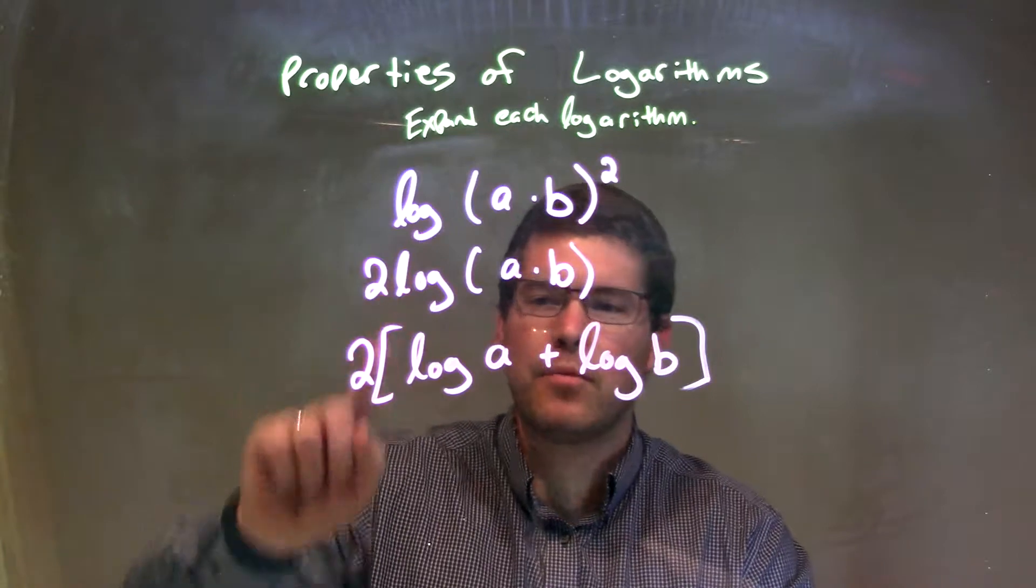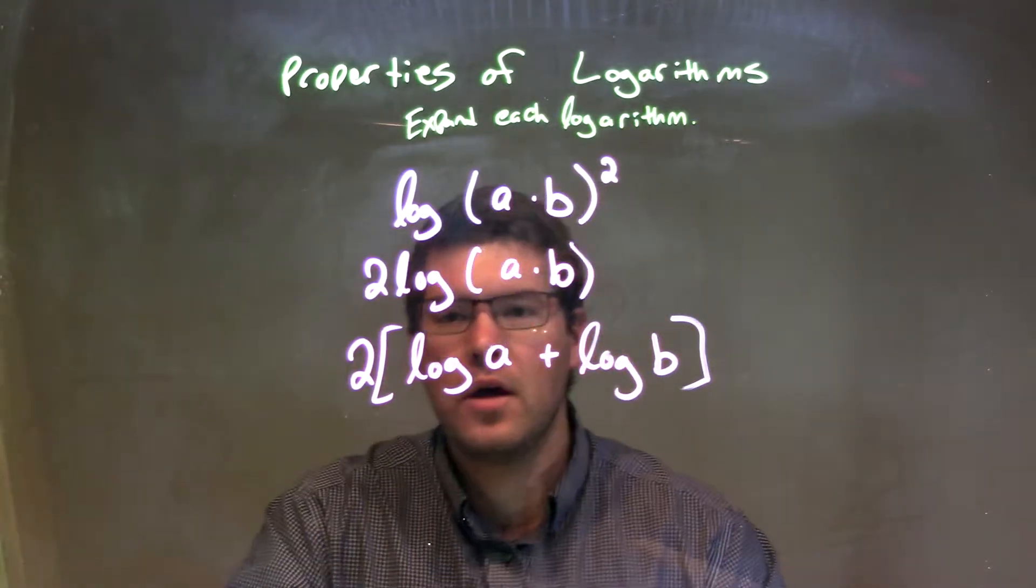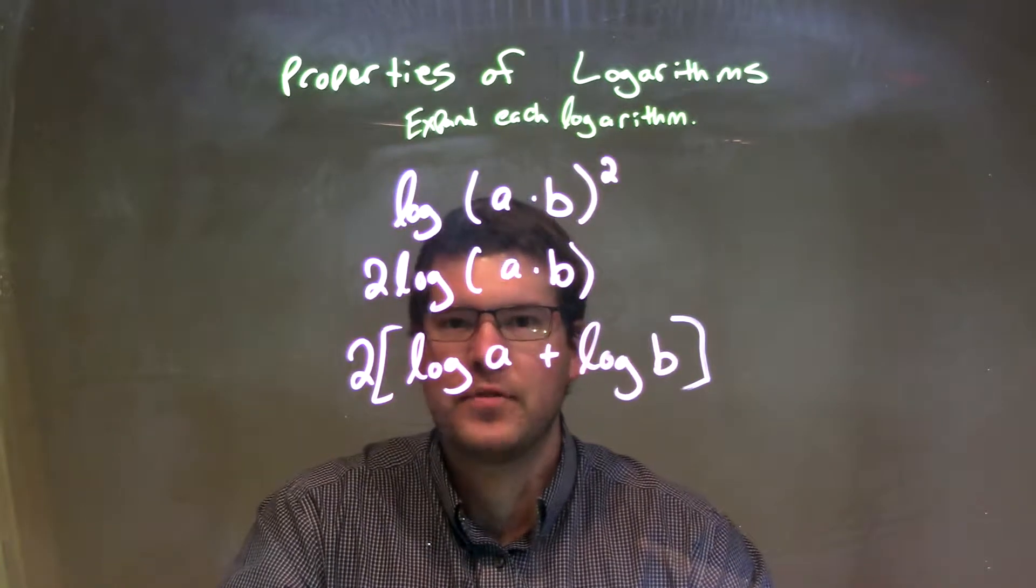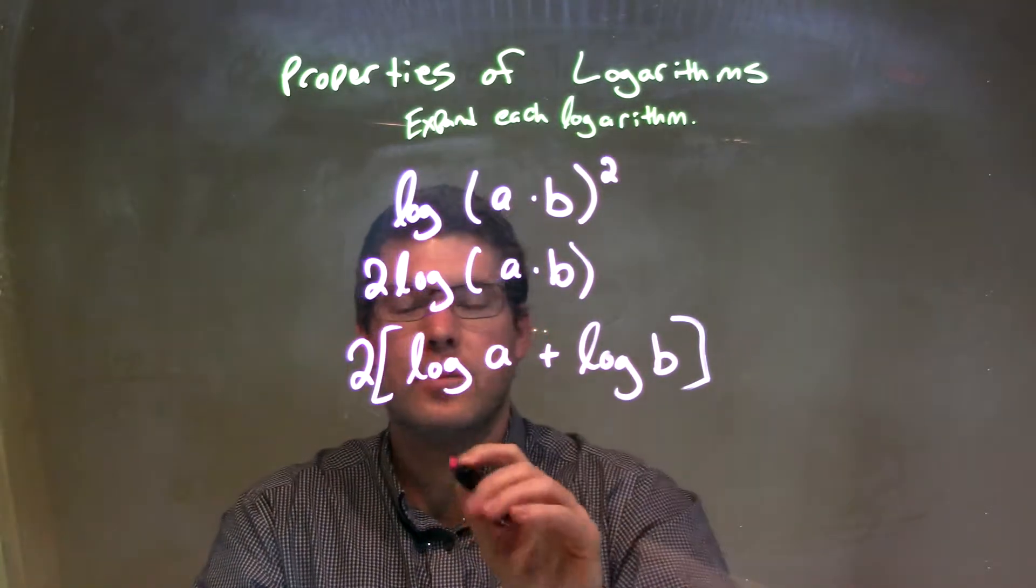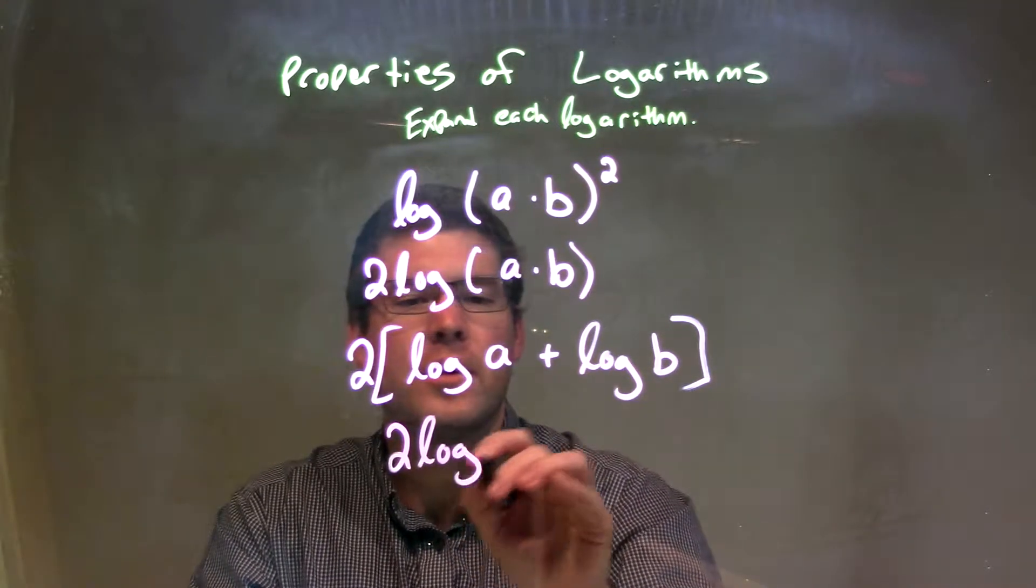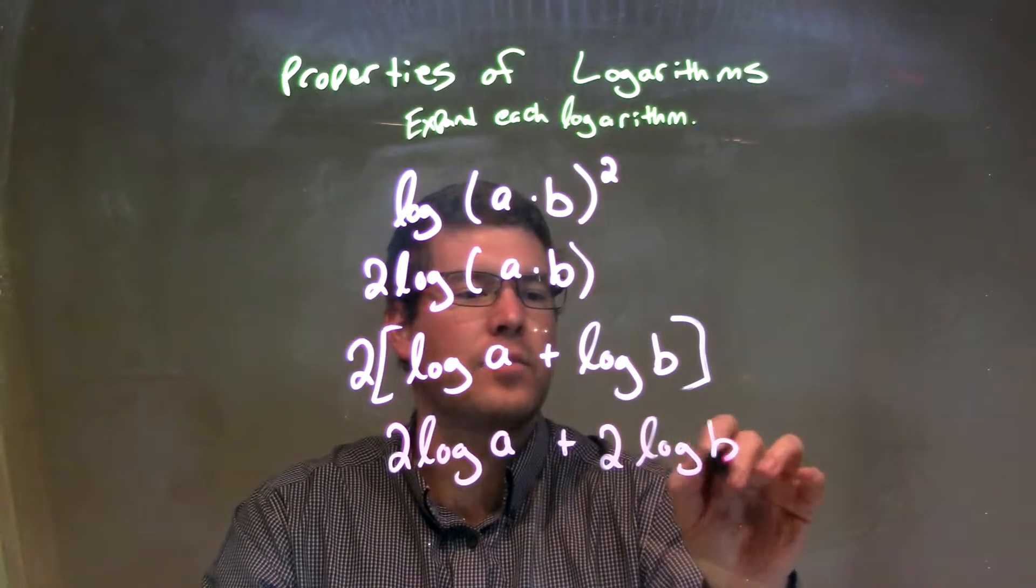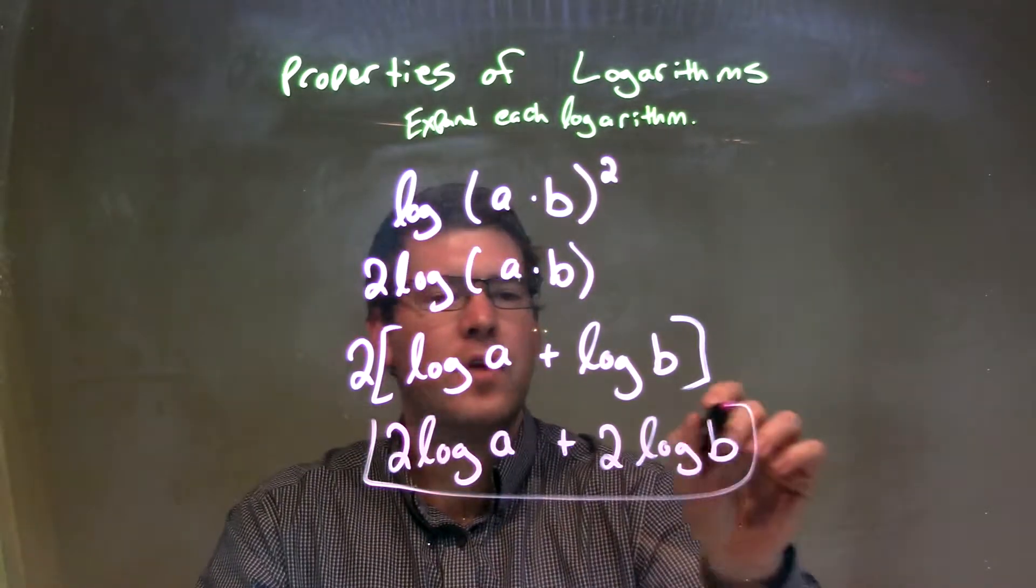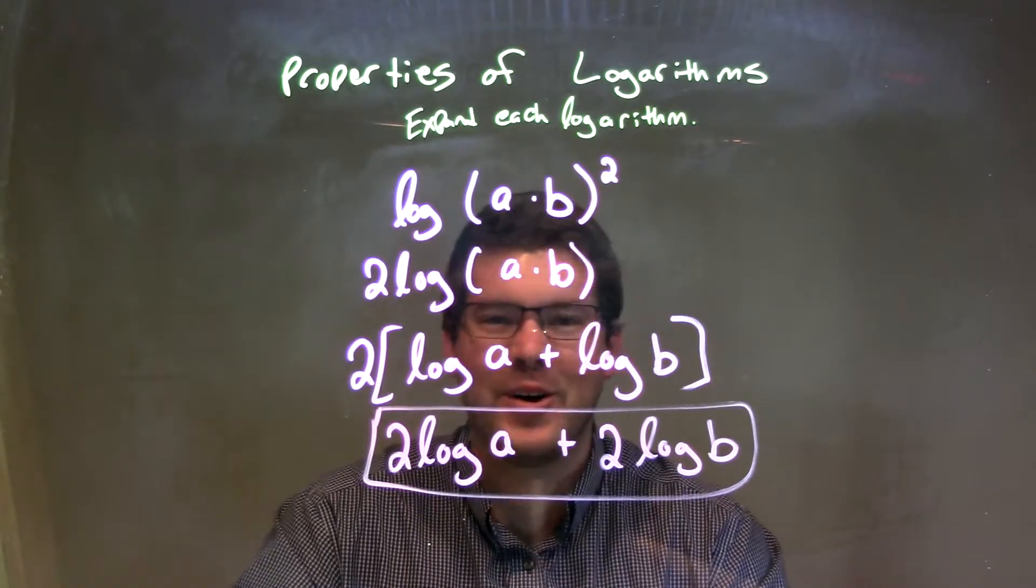But I don't have just the 2 outside - I put brackets showing that it has to go to both parts, the log of a and the log of b. So when we write the final answer, I'm going to distribute that 2 across to both parts, giving me 2 log of a plus 2 log of b.